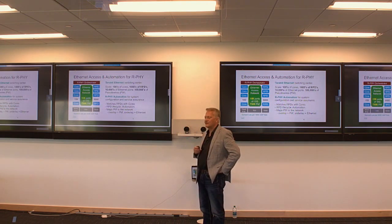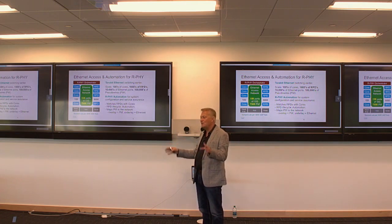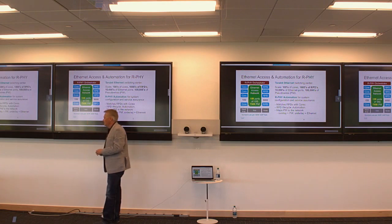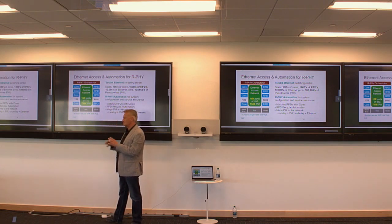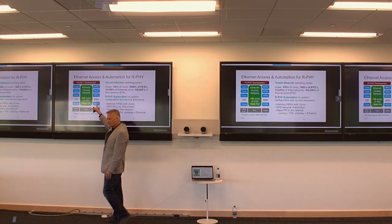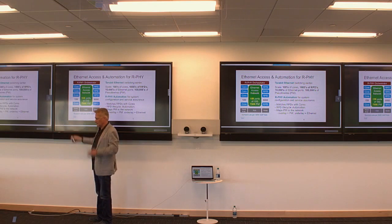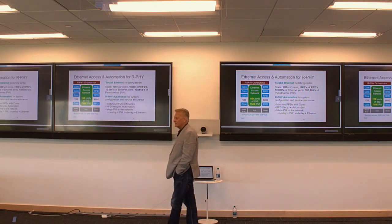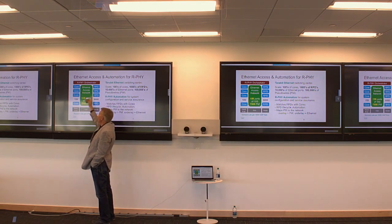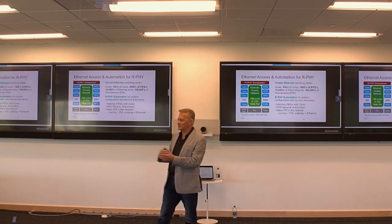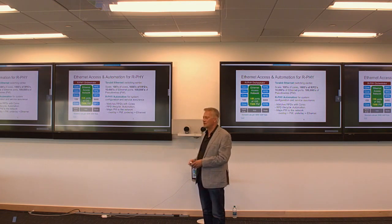When you do all that, you solve the power and real estate problem but create a networking problem and a management problem. A large hub site might have had 10 CMTSs. Once you go to deep fiber, you can have 6,000 Remote PHY Devices out there, maybe 150 cores across video and data, 15,000 ports of Ethernet switches, and almost a million pseudowires — tunnels connecting them together. We created a very complex problem. Luckily we're a networking company, and we get to sell networking equipment into that and write automation suites. We're very strongly positioned in this market.